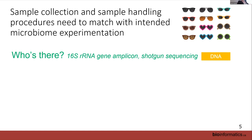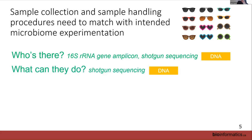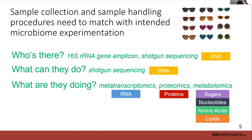If you're just interested in who's there, you go for amplicon or shotgun sequencing to look at taxa — you just need DNA. If you're interested in what they can do, you need shotgun sequencing. And if you want to know what they are doing right now, that's where you get into metatranscriptomics, and the growing capacity in proteomics and metabolomics.